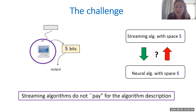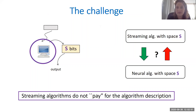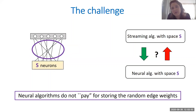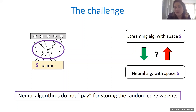When we compare these two models, it is not so clear which one is stronger. On one hand, we have an advantage for streaming algorithms because we don't need to pay for the algorithm's description — we don't need to store it in memory. While in neural algorithms, the algorithm is actually encoded in the network itself, in the hardware of the network. Then in the other direction, in neural algorithms we have a free source of randomness that we can encode in the edge weights. Recall that the space complexity of a neural algorithm is the number of non-input neurons used.